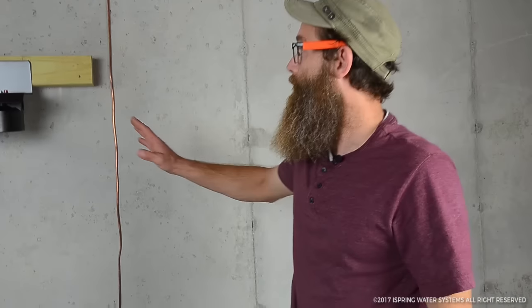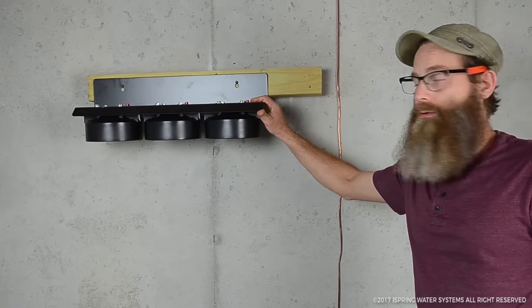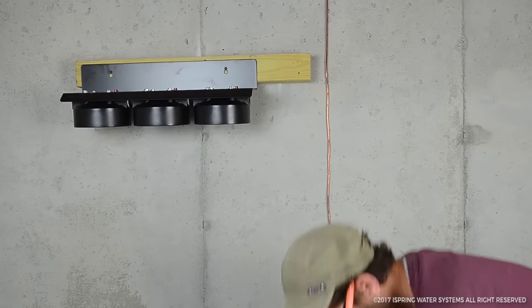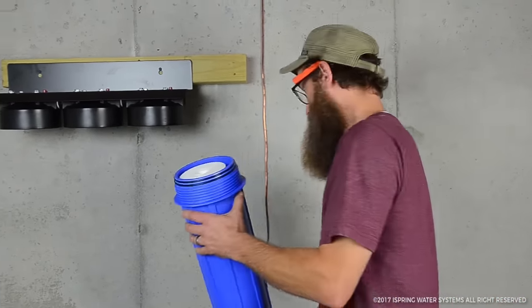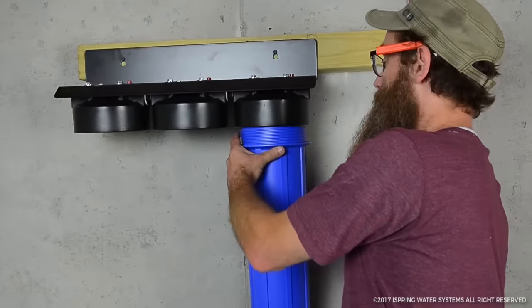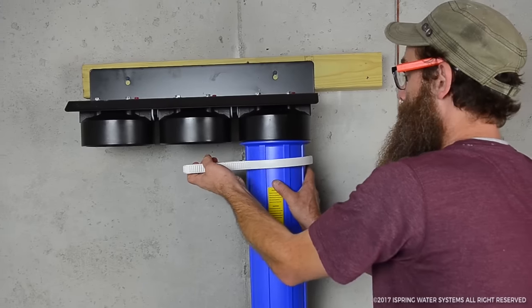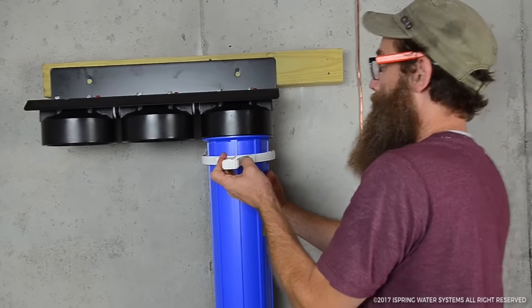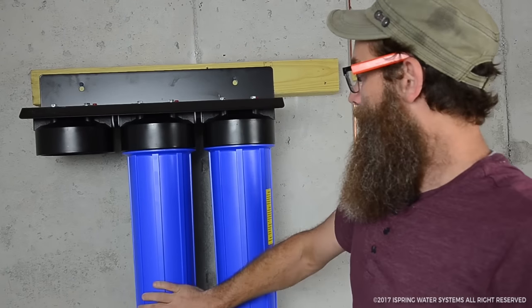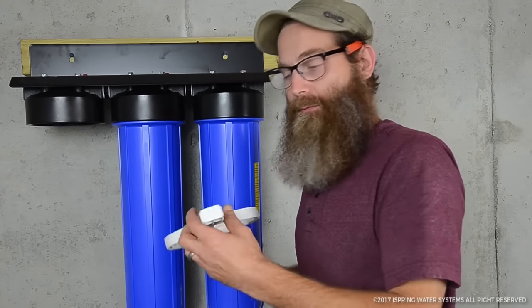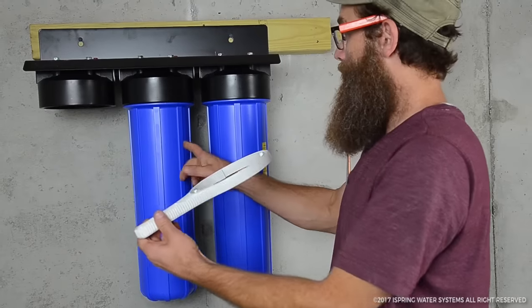We just need to install those on the bracket which I already have installed on the wall. And it's just as simple as taking the piece and screwing it straight in and making sure that it gets tight. There's a wrench for it. The filters go in very easily and smoothly.